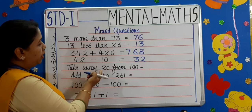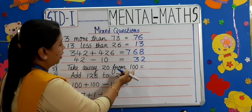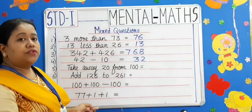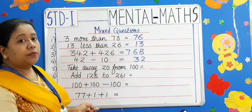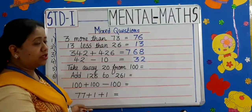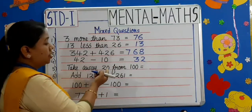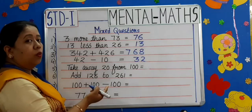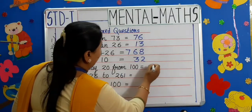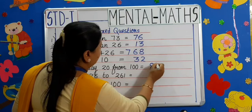The fifth one: take away 20 from 100. 'Take away' means we have to do subtraction. So, 100 subtract 20 is 80.